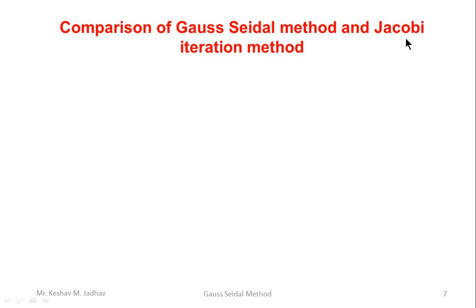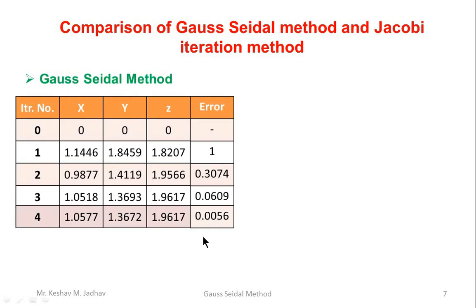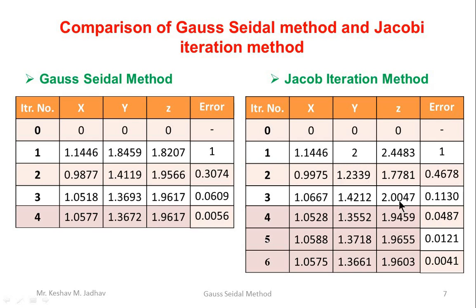In another video we saw how to solve the problem using the Jacobi iteration method. Now we compare Gauss-Seidel and Jacobi. For the current problem, the Gauss-Seidel table is shown alongside the Jacobi solution. In Gauss-Seidel, to calculate y in iteration 1 we used the new x = 1.1446 and z = 0; to calculate z we used x = 1.1446 and y = 1.8459.